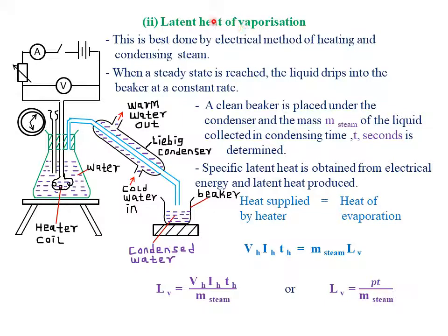Today we are looking at experimental determination of the latent heat of vaporization. The apparatus that you need: one, you need an ammeter for detecting the current through the heater. You also need a voltmeter for measuring the amount of voltage through the heater. You also need a clock for detecting the time taken for the steam to condense. Then we have a variable resistor for varying the amount of voltage and current flowing through the heater.